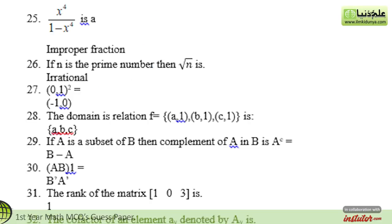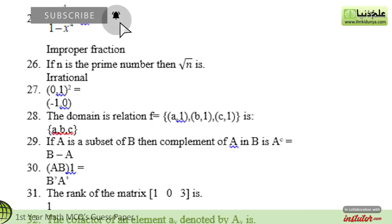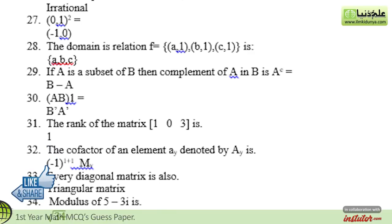The twenty-fifth statement is: x⁴−1 over x⁴ — the correct option is an improper fraction. The twenty-sixth statement is: if n is a prime number, then √n — the correct option is irrational. The twenty-seventh statement is: (0,1)² equals — the correct option is (−1, 0) as an ordered pair. The twenty-eighth statement is: the domain of relation consisting of ordered pairs {(a,1),(b,1),(c,1)} — the correct option is the set {a, b, c}.